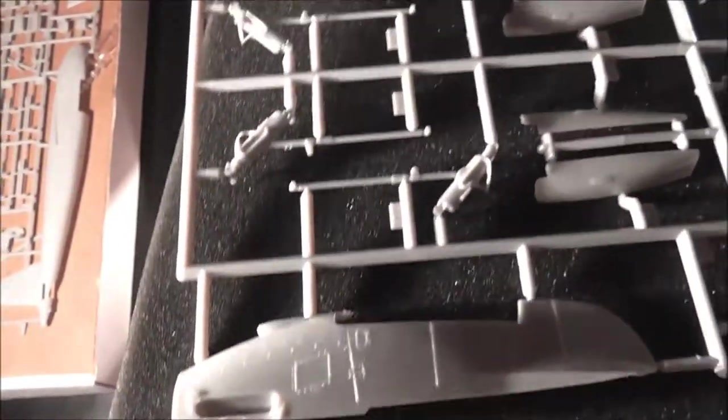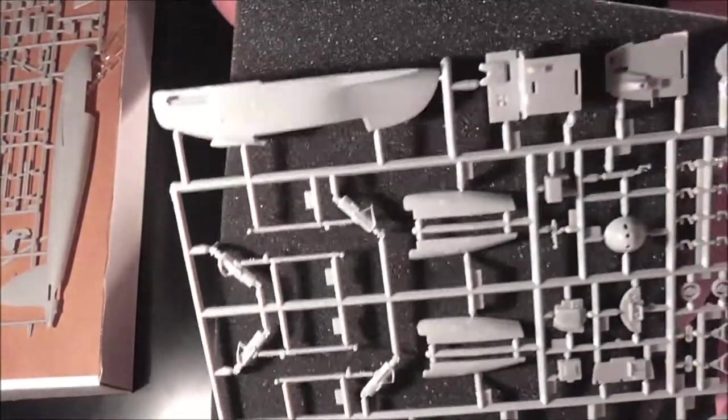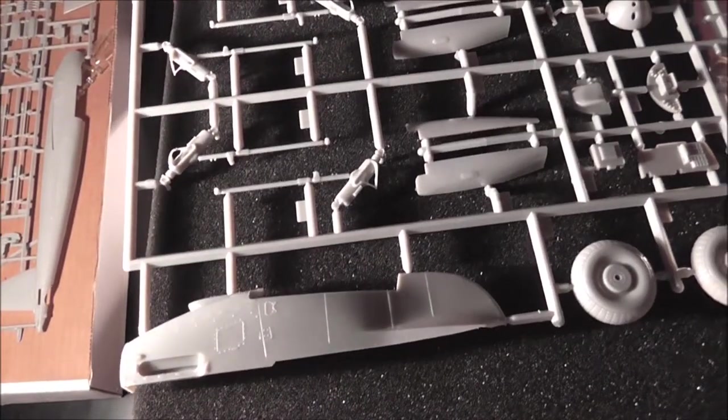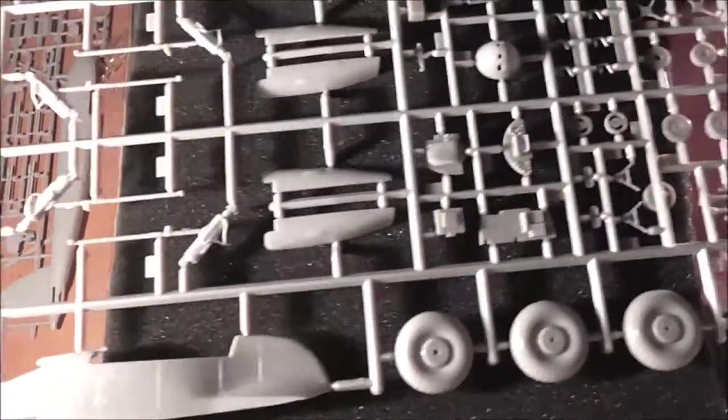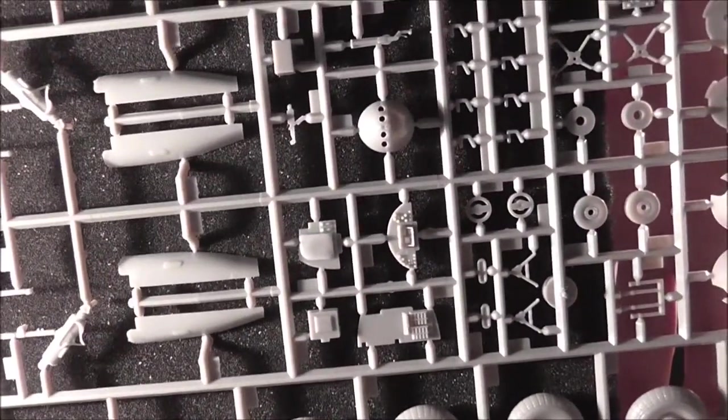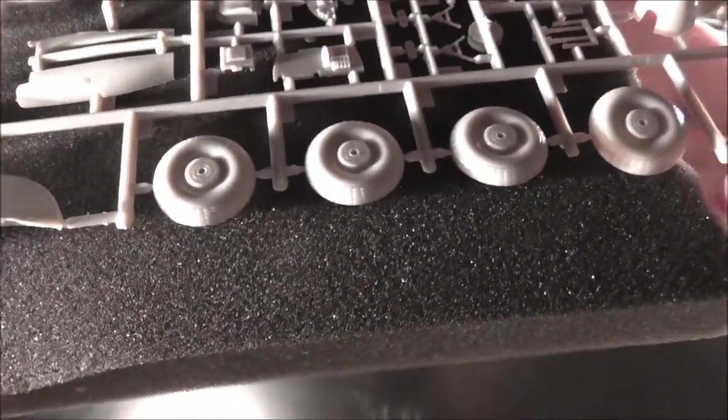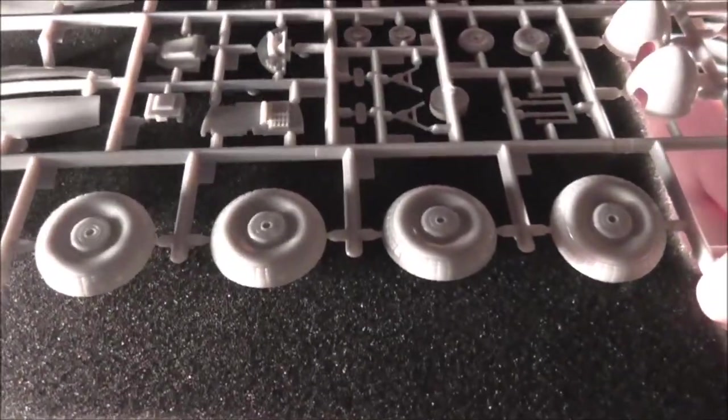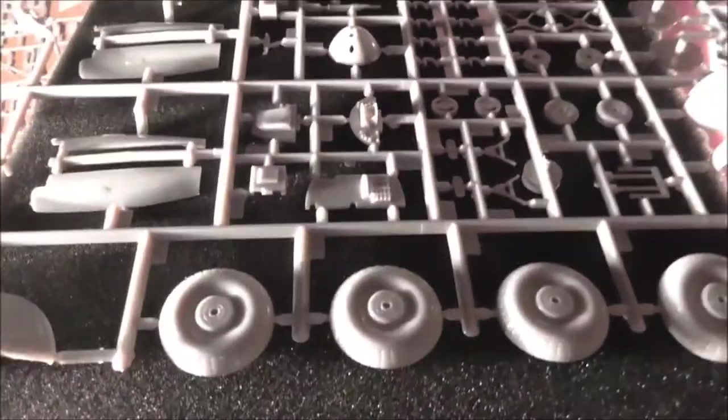So, second sprue. We have the first of the engines. One half and the second half. We have the undercarriage legs. And the tail wheel. We have a nose cone for one of the versions. I don't know if there's two different actual nose cones for it. The wheels have quite nice detail on them. As much as you'd expect from a new kit. So, I'd say this kit's well ahead of its time. Looking at it.